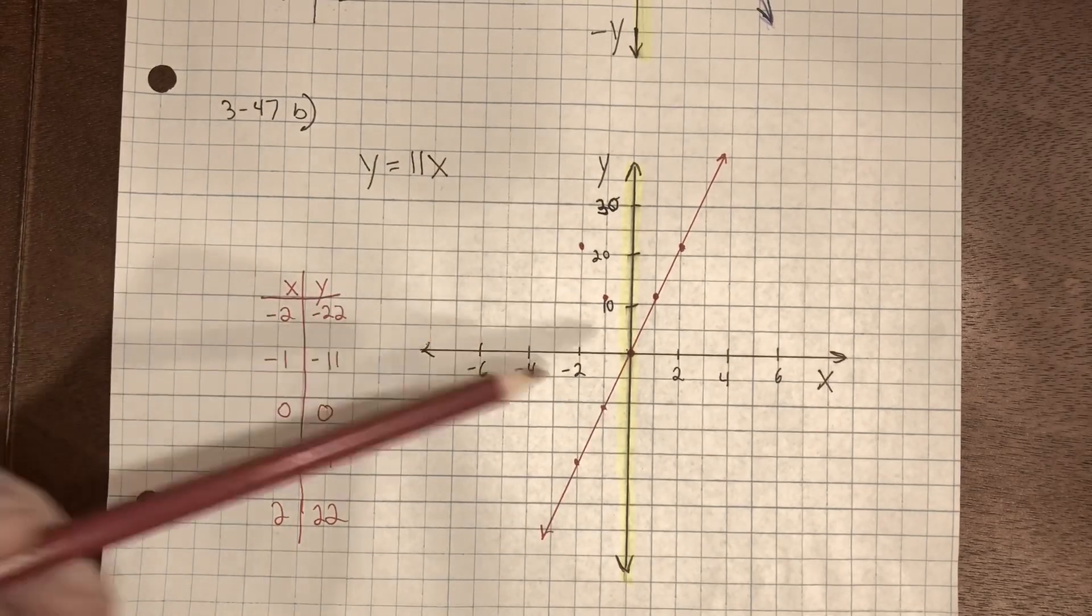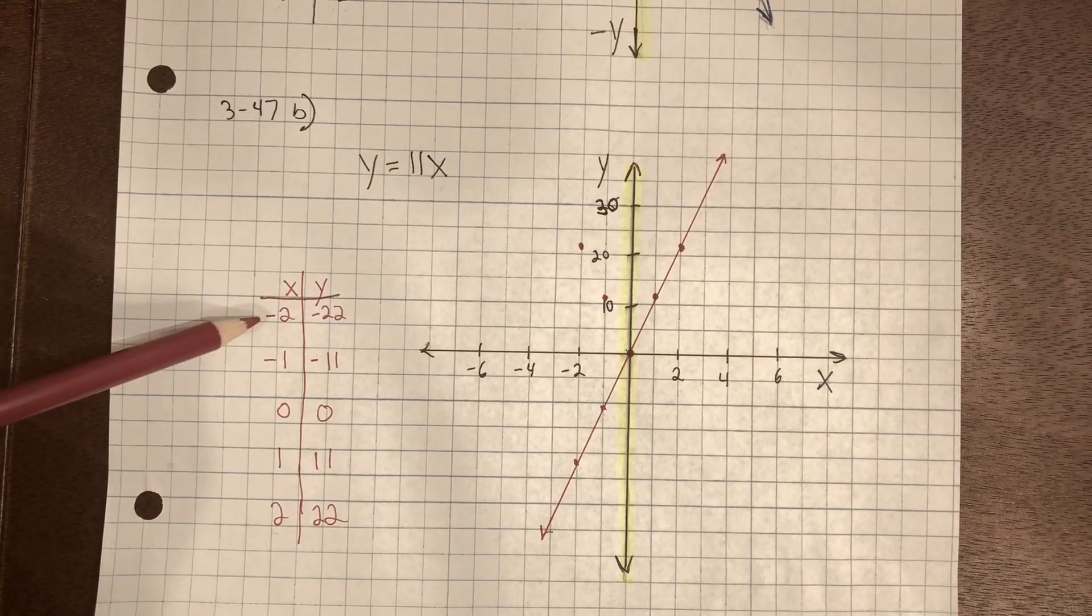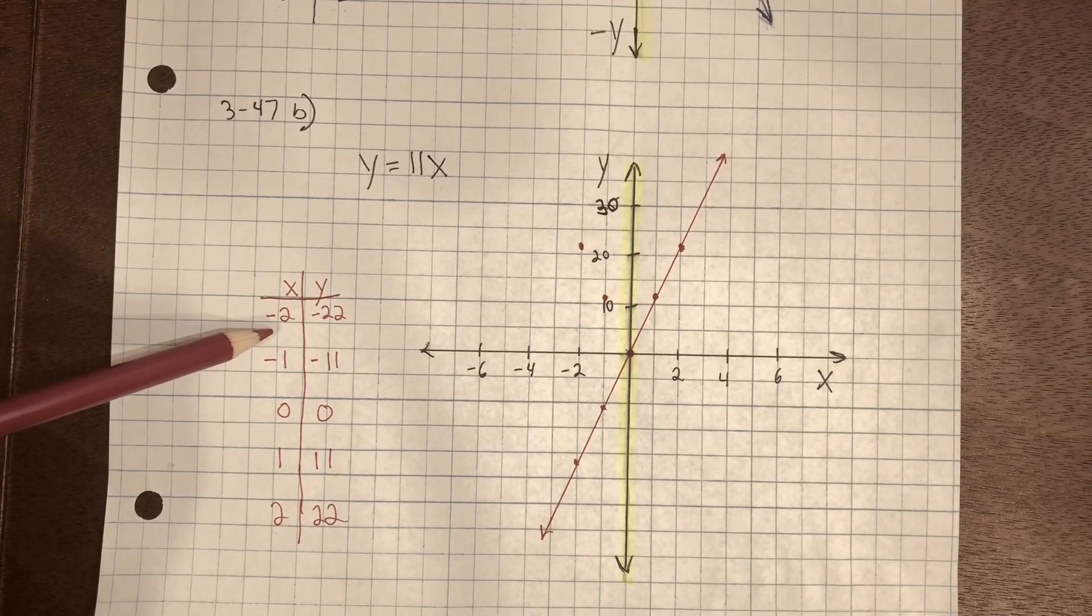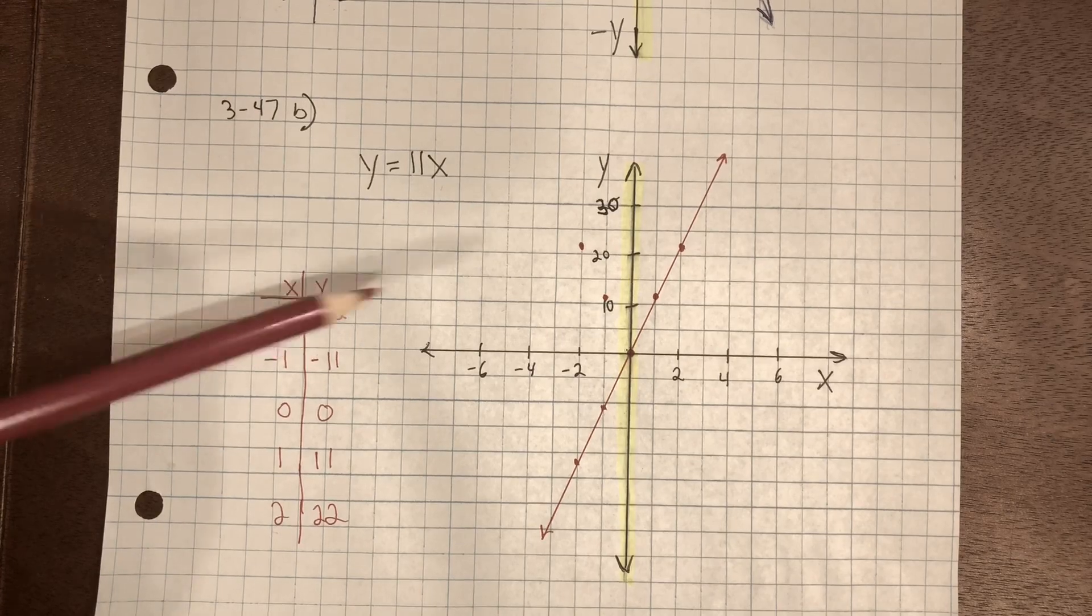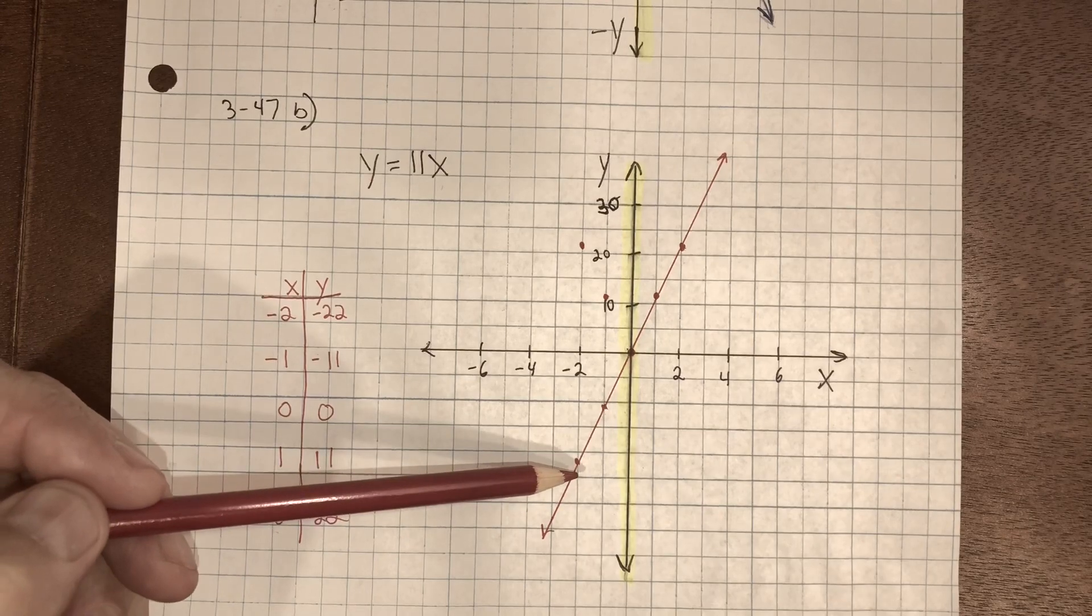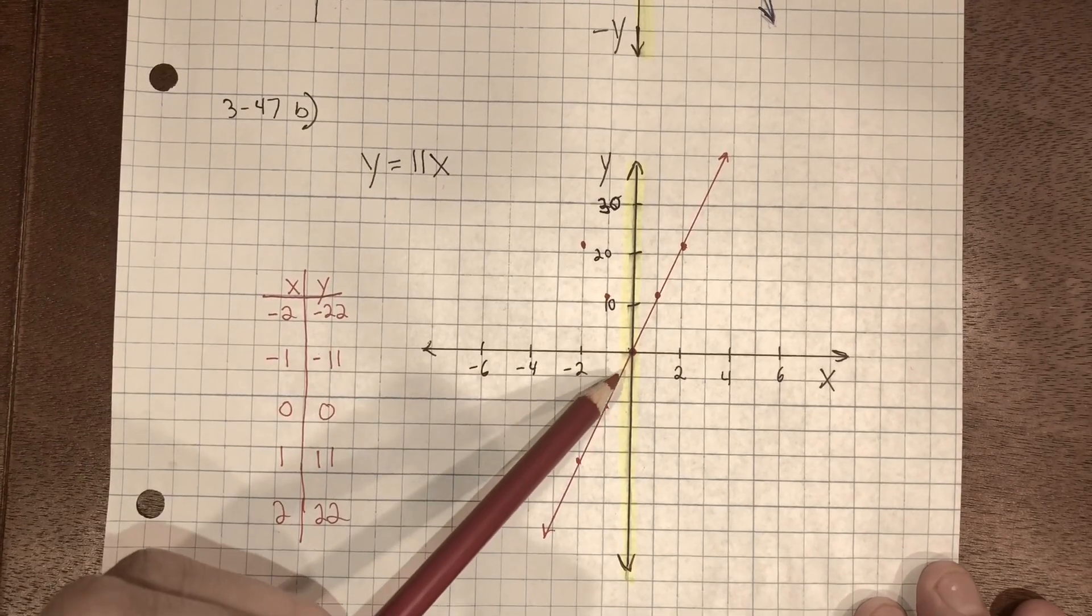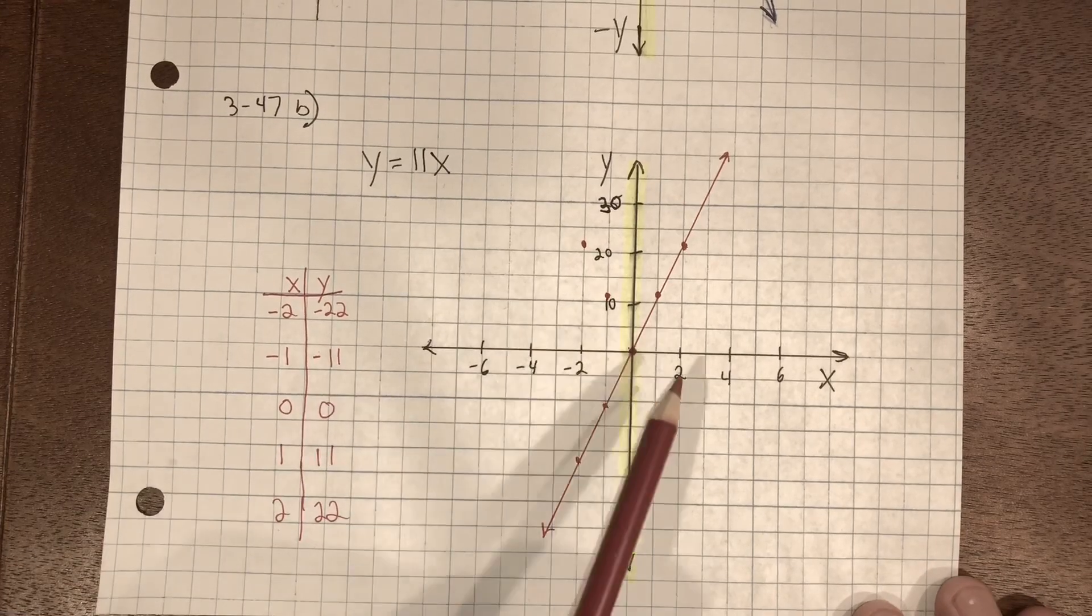Now I go ahead and plot the points on the graph from the values in the table. Negative two and negative 22. If you look, I scaled this differently from the previous problem.